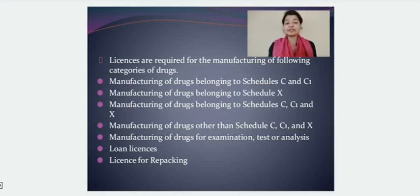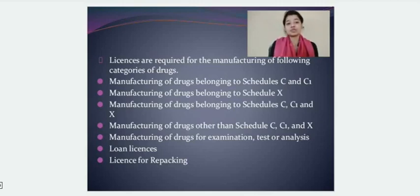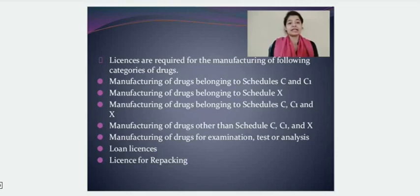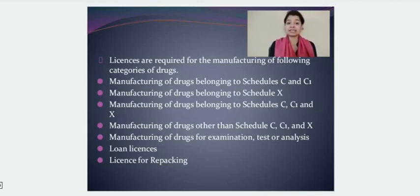The licenses required for the manufacturing of drugs or cosmetics can be divided into different categories: manufacturing of drugs belonging to Schedule C and C1; drugs belonging to Schedule X; drugs belonging to Schedule C, C1 as well as X; drugs other than those specified in Schedule C, C1 and X; manufacturing of drugs for examination and test; loan license; and license for the procedure of repacking.